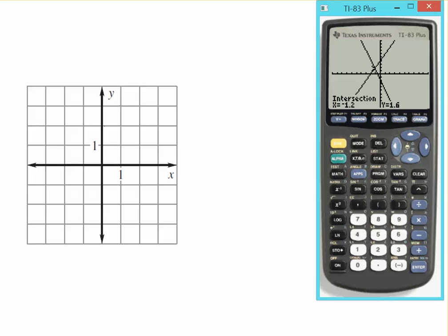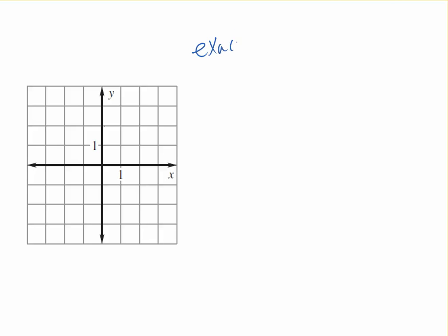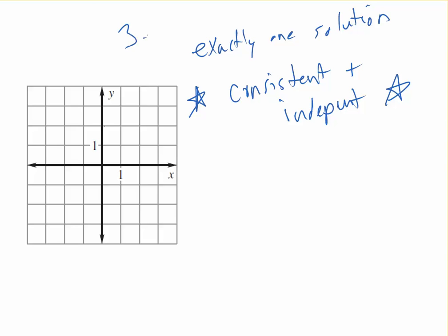So there are three things that can happen when you have a set of two equations. Sometimes there's only one solution. So sometimes, like in this situation that we just did, there is exactly one solution. Because there's only one point where they cross. When this happens, the vocabulary you need to know is these lines are consistent and independent. That's important vocab for section 3.1, consistent and independent.